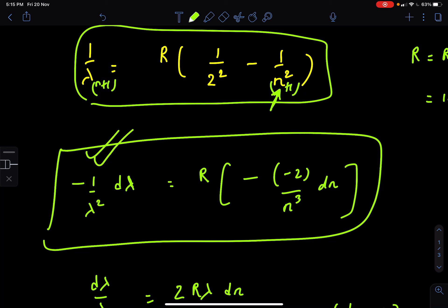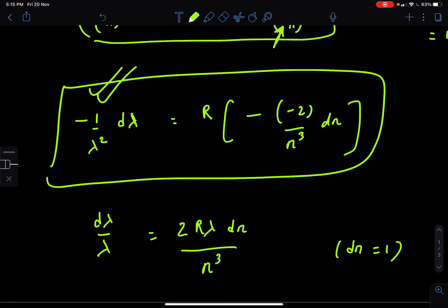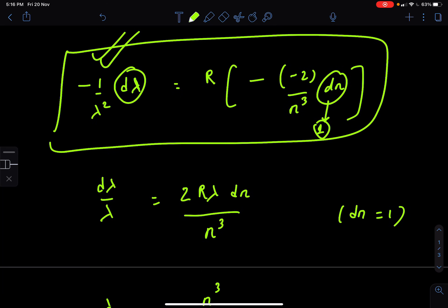Now, change in n is 1. Because previously the electron was coming from n to 2. Now it is coming from n plus 1 to 2. So the change in n is 1. Now, because of this one change in n, which means dn is 1, there is a change in lambda, d lambda. Now, d lambda by lambda means you have to transfer one lambda on the other side. We get like this.